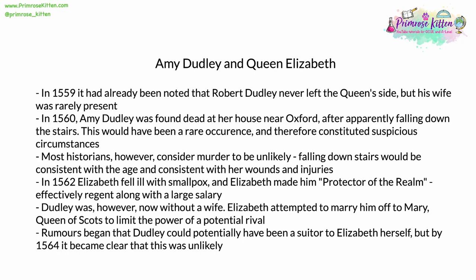In 1562, Elizabeth fell ill with smallpox, a dreaded disease of the age which left people disfigured and killed many. Elizabeth made him protector of the realm, effectively regent while she was incapacitated. He also received a large salary for this role, along with the power and prestige that came with it. Dudley was now without a wife, and Elizabeth attempted to marry him off to the Queen of Scots, to limit the power of that potential rival. Rumours began very quickly, however, that Dudley could potentially have been a suitor to Elizabeth herself. But by 1564, as attention and Elizabeth herself moved on, it became increasingly clear that this was unlikely.